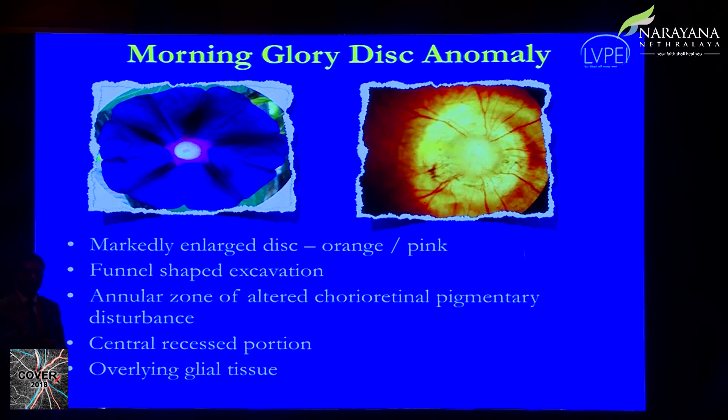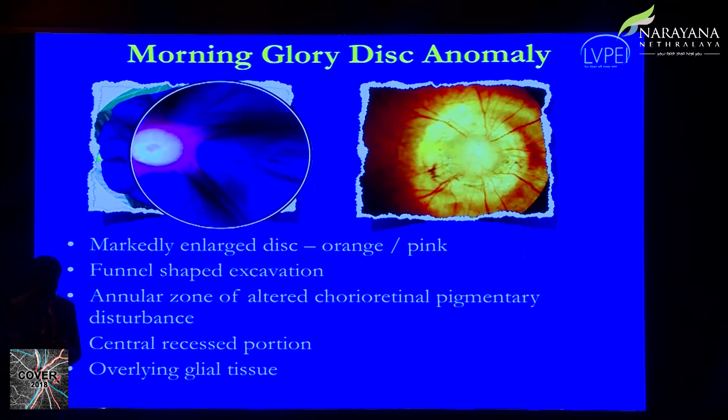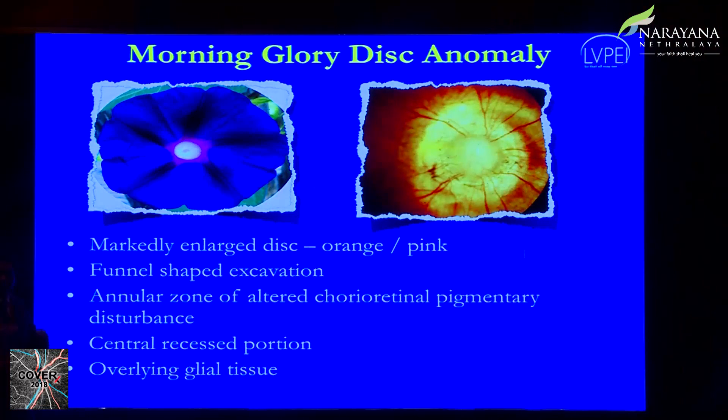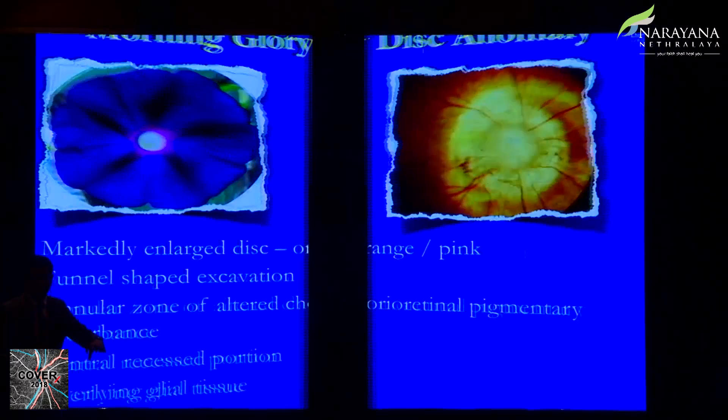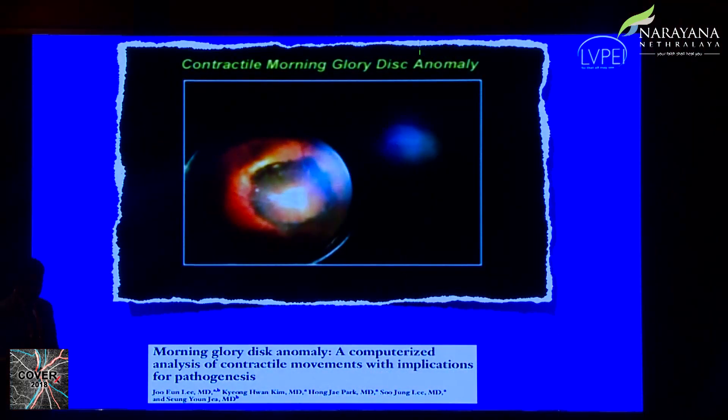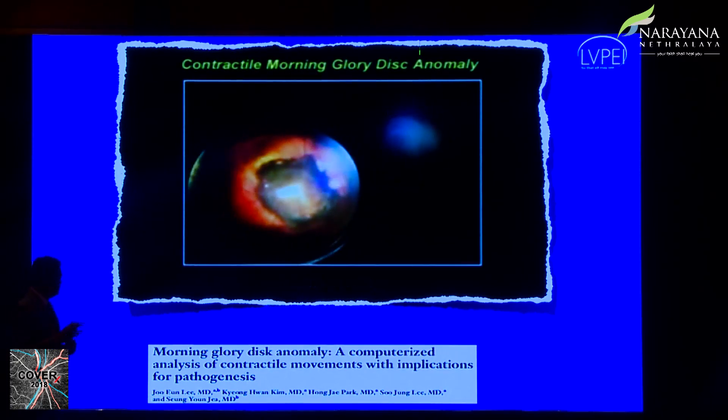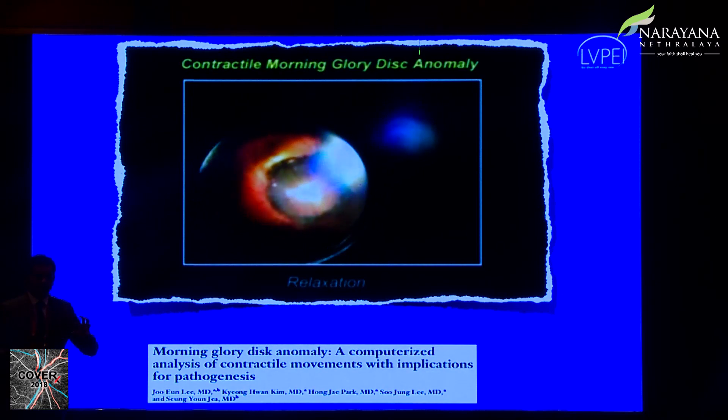Morning glory anomaly: the disc always has a central tuft, with peripapillary vessels emerging from the periphery in a straighter course. The disc is always large, with a funnel-shaped excavation. It can be unilateral or bilateral. Notably, the vessels within the central tuft tissue can contract and relax, producing pulsatile swelling on the optic disc — a rare but documented association.